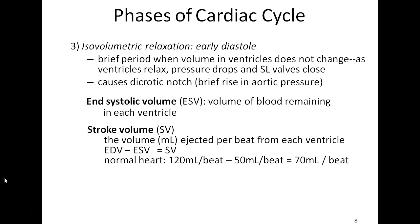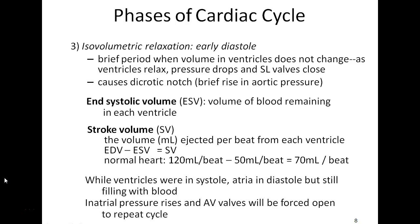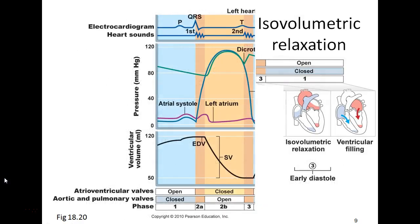Stroke volume is approximately 70 milliliters per beat. While the ventricles were in systole, the atria were relaxing and in diastole but still filling with blood, since multiple events happen within one cycle at any given moment. Atrial pressure rises and AV valves are forced open to repeat the filling phase. Here is shown that final phase: isovolumetric relaxation.